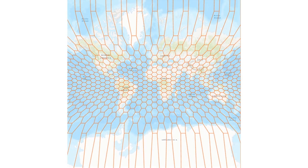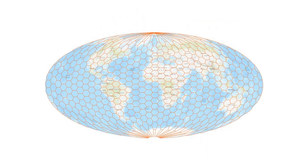Here is another example with binning. Hexagons were created in an area-preserving projection, so they literally cover the same area of the Earth's surface. But they do not look like they do in Web Mercator, especially those towards the poles. On the area-preserving map, those hexagons look more like they cover the same area, even though their shape does not always look like hexagons, especially those at the poles.